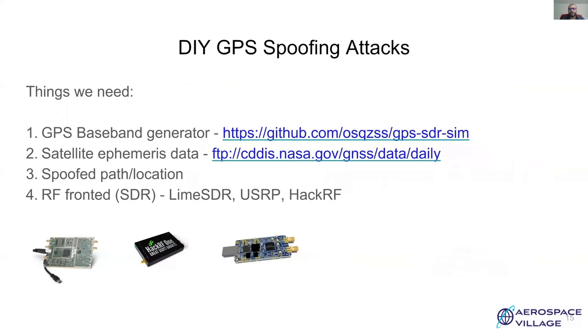Increasing popularity of inexpensive software-defined radios has made executing GPS spoofing attacks quite straightforward. To execute a GPS spoofing attack, we need a baseband signal generator, which can generate GPS messages, perform spread spectrum operations, and modulation. It relies on broadcast ephemeris data of satellites and a set of coordinates to generate spoofing signals. Finally, we need a software-defined radio front-end, which can transmit data on 1.57542 GHz, which is the L1 carrier frequency.